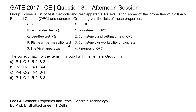For R the answer is 4, and the Vicat apparatus is used to determine the consistency and setting time of ordinary Portland cement, so for S the correct match is 2. Looking at the options, option A gives P-1, Q-3, R-4, S-2, which is the correct answer for this question. Thank you.